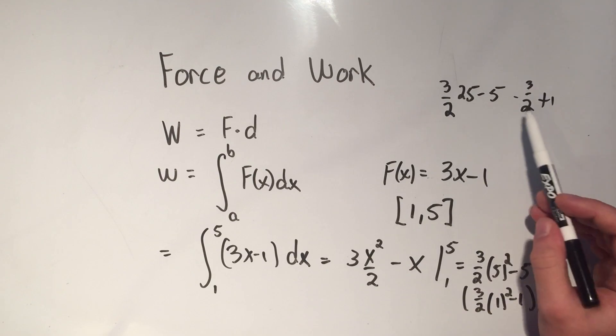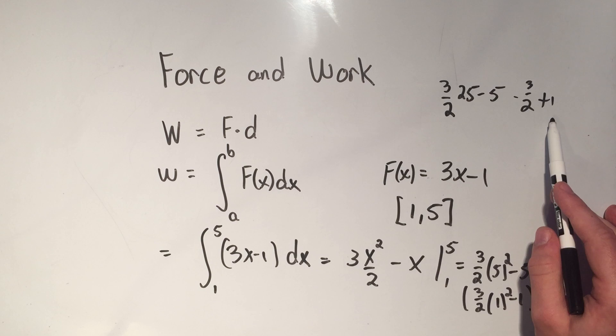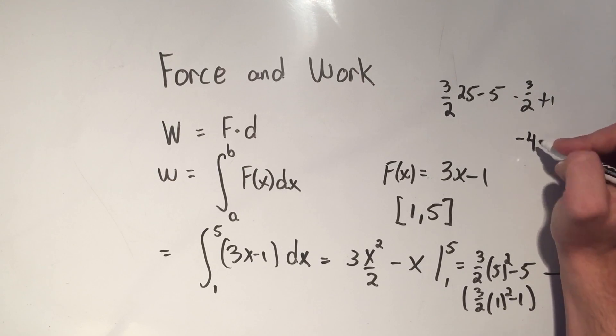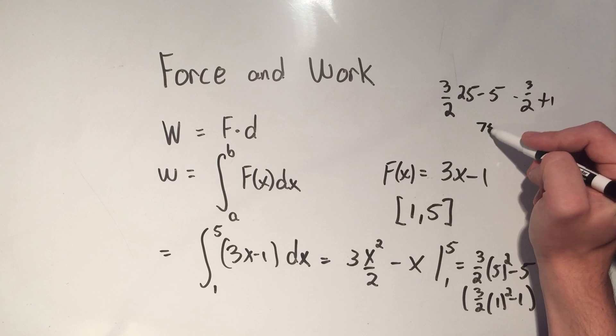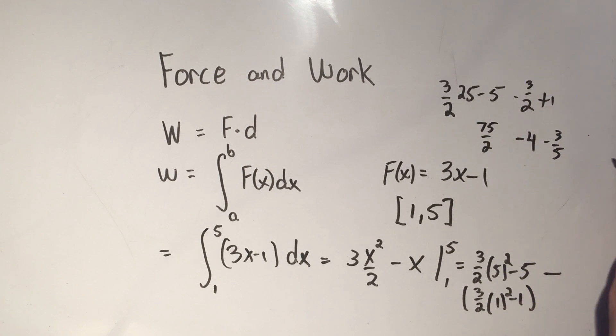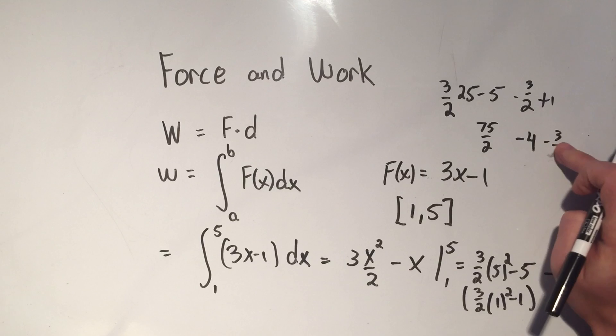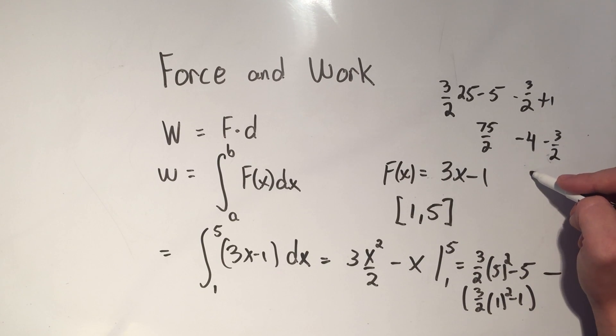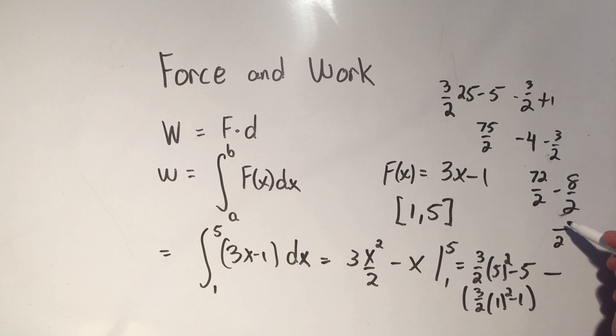Let's see, I've got minus 5 plus 1, that's going to be minus 4. 25 times 3 is 75 halves, minus 3 halves. Then 75 halves minus 3 halves, that's 72 halves minus 4. And 4 is 8 halves, so 72 minus 8.